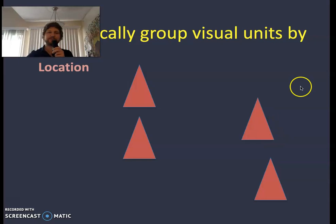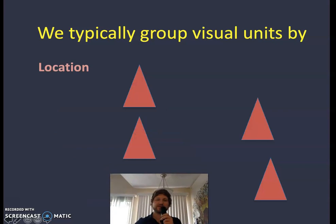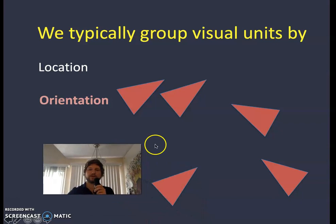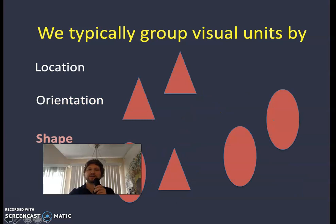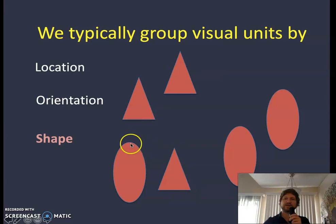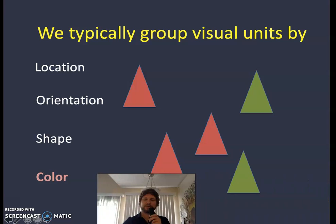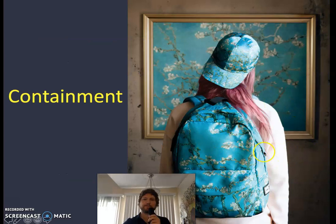We typically group by location — obviously these two will look like they're together and those two will look like they're together. Orientation: even though one shape is closer to another, you group it with the ones pointing the same direction. Shape: triangles seem to go together and ovals seem to go together. Color: these link together because they're red, and those two link together because they're green. These are common ways that people group visual units.